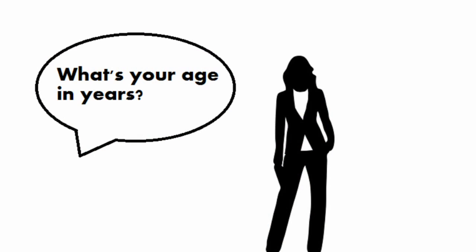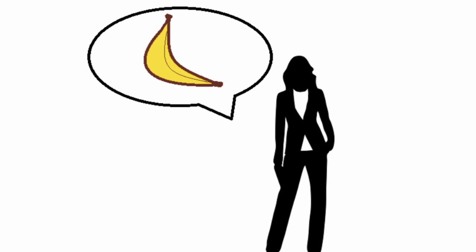Hey SuperCoders! When we write software, people tend to use it in pretty unexpected ways. For example, if you ask someone what their age is in years, nothing stops them from saying something silly like banana.